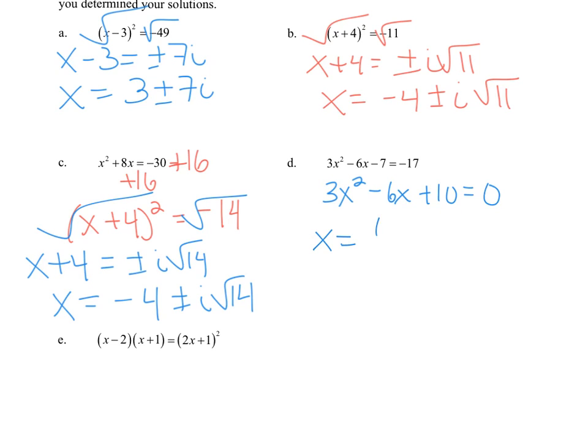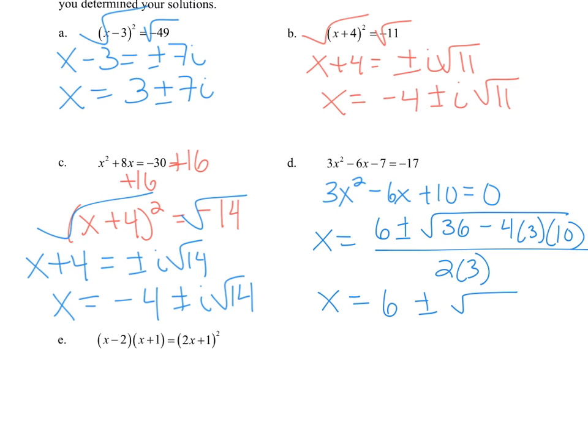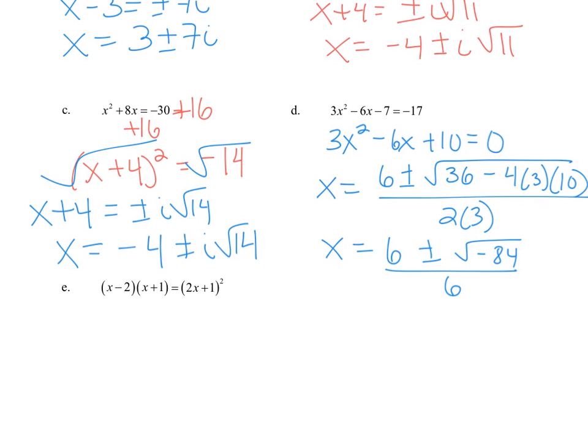x equals -b plus or minus the square root of b² - 4ac all over 2a. So our answer is 6 plus or minus i√84 over 6.